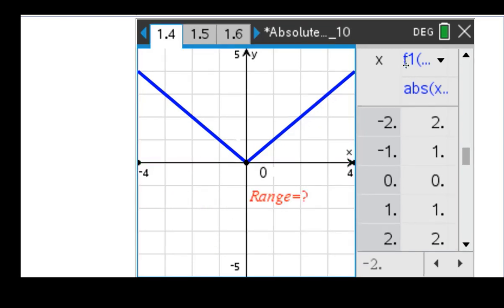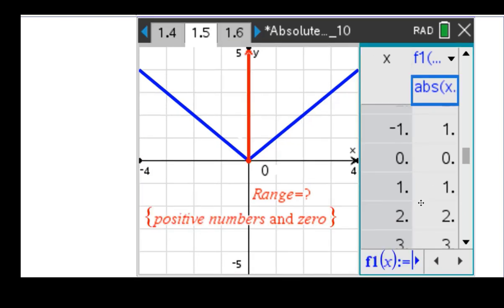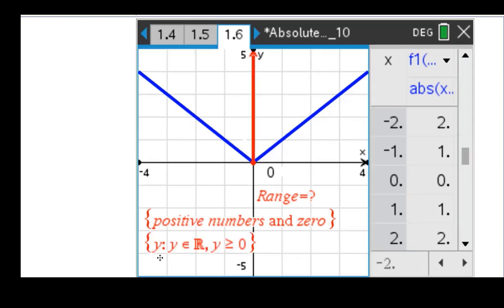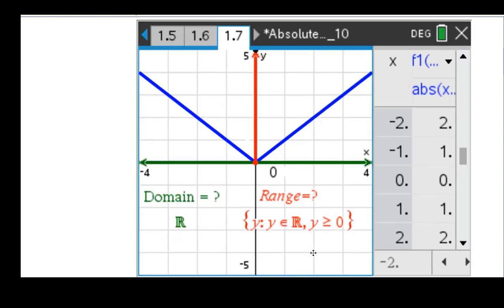As the range goes, if we look at the y values, you can see they're always positive or zero, including decimals and fractions and square roots and irrational numbers. And we write that the set of all y such that y is a member of the real numbers, y is greater than or equal to zero. So here is the domain and range.